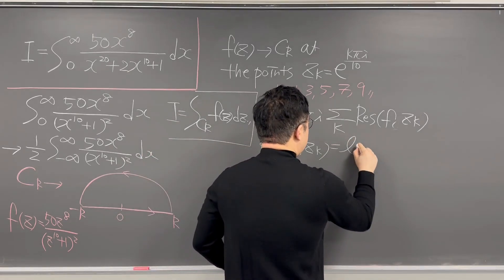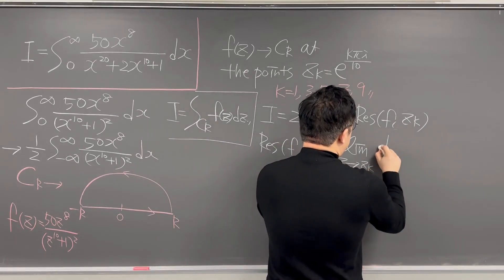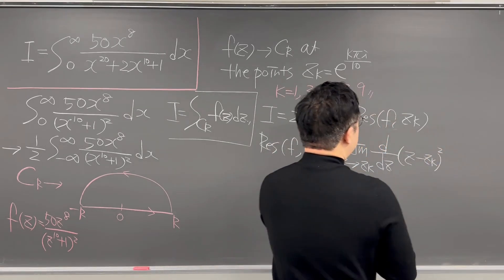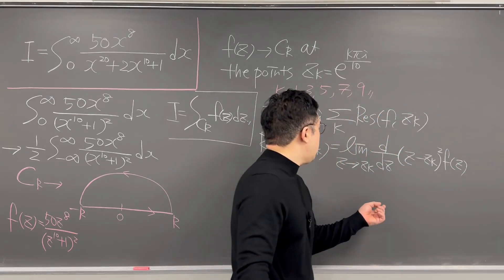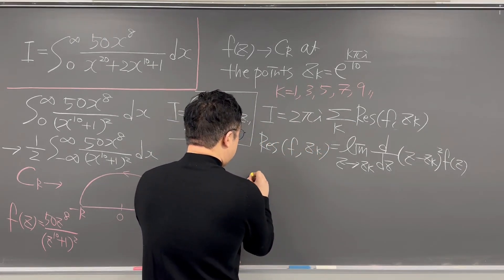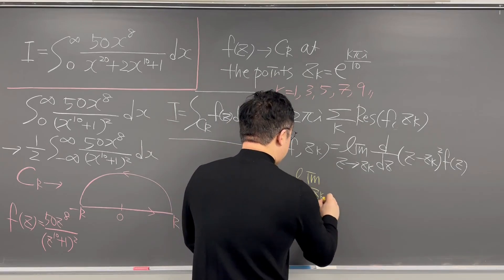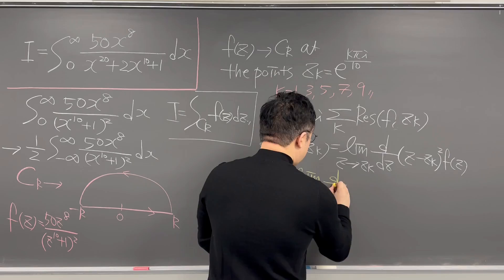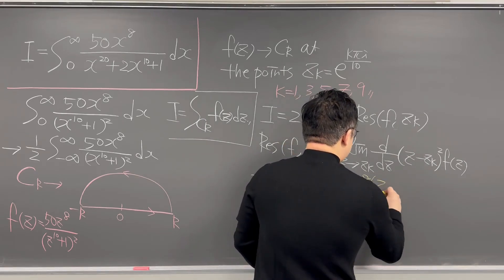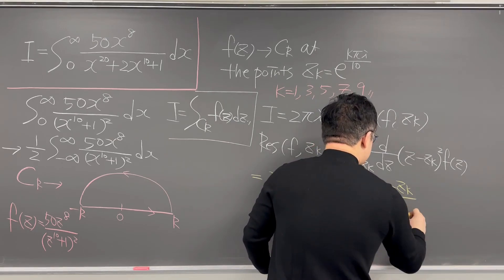The residue of F at Z_k has to be done at the limit as Z goes to Z_k of D over dz times z minus z_k squared times F(z). Based on this, we can evaluate this as 25 times the limit as Z goes to Z_k of D over dz times Z to the power of 8 times Z minus Z_k over Z to the power of 10 plus 1, squared.